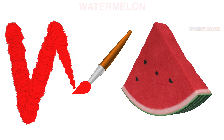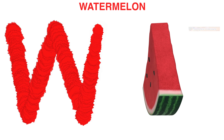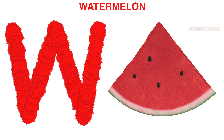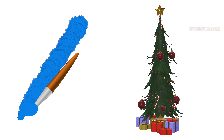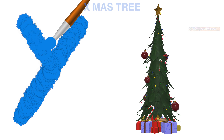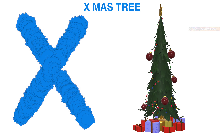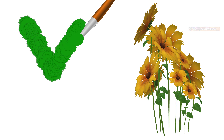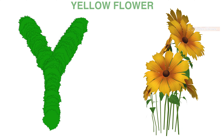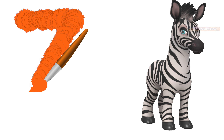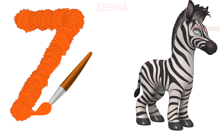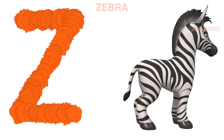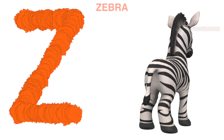U for UFO, won't you sing with me. V for Venus, W for watermelon, X for Xmas tree, Y for yellow flower.